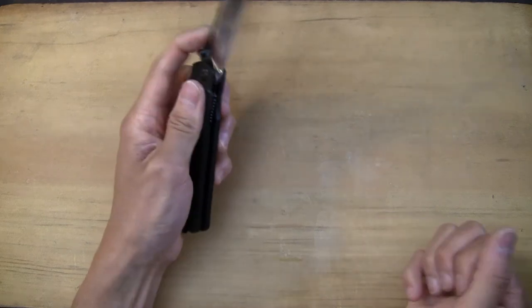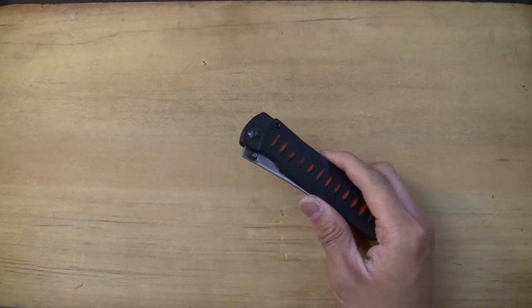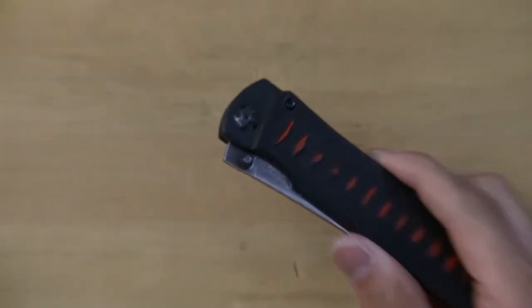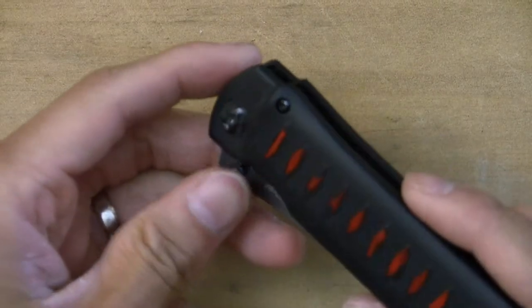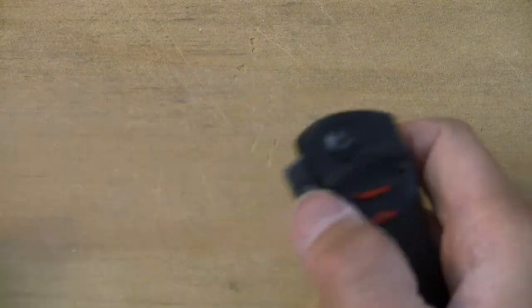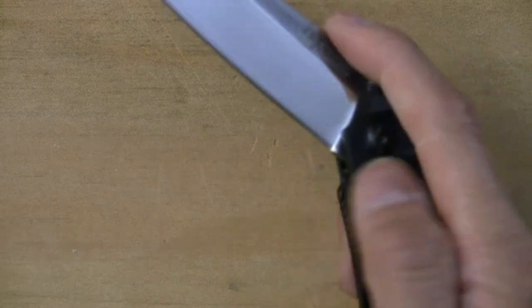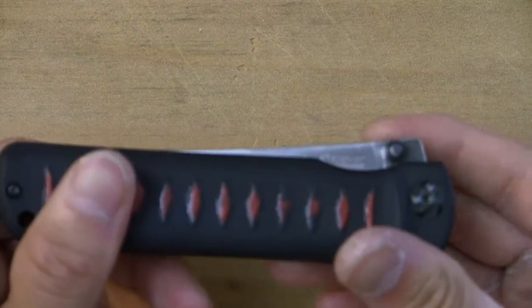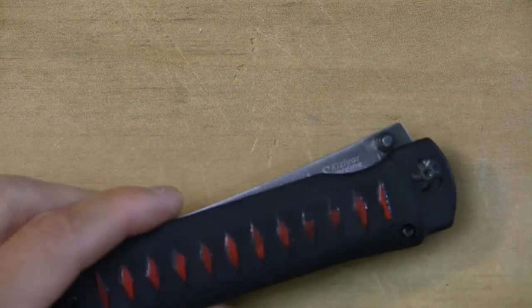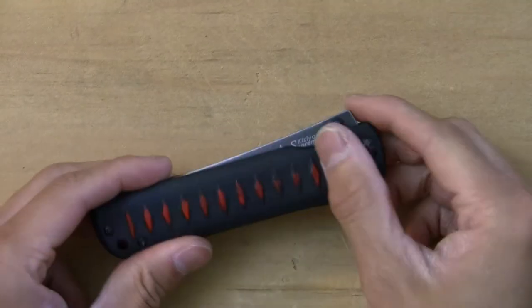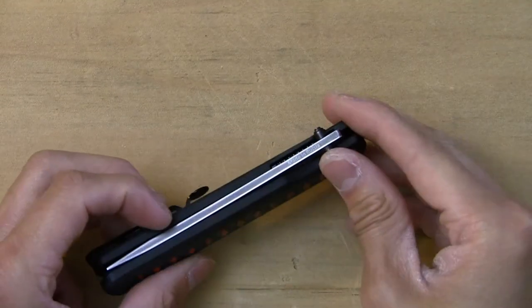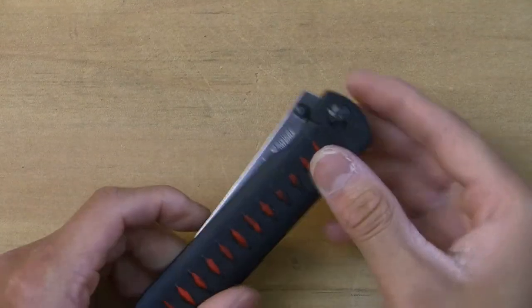Let's go on to the deployment. Deployment is excellent by the way. These thumb studs are probably the sharpest. When I first got this, this was extremely sharp. It actually hurt to do this. And I almost thought about sanding them down a little bit. But after a while I was like, you know, there's no point in sanding them down because where the thumb studs are located is perfect for flicking it out.